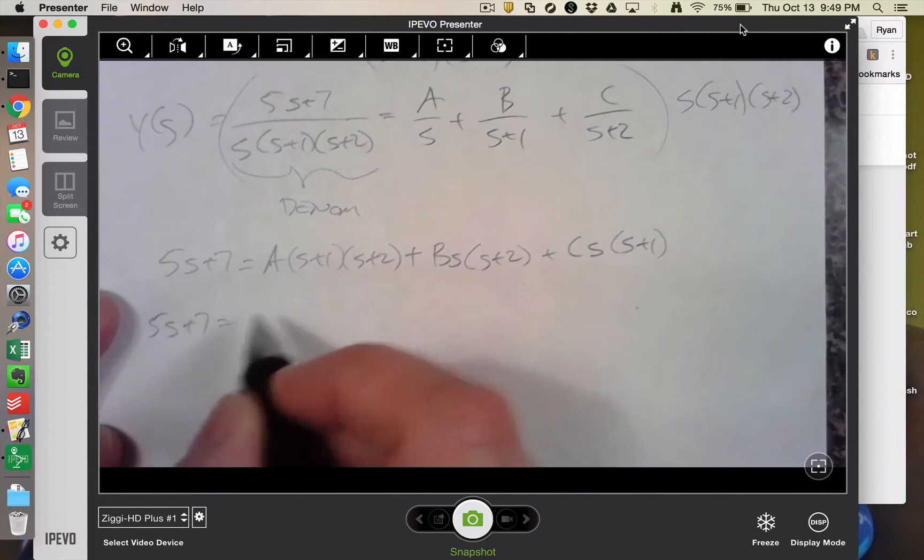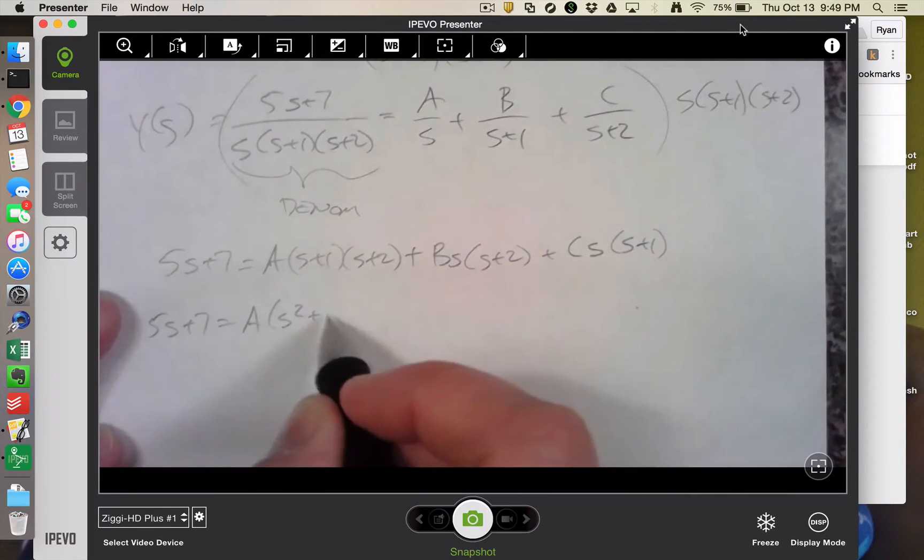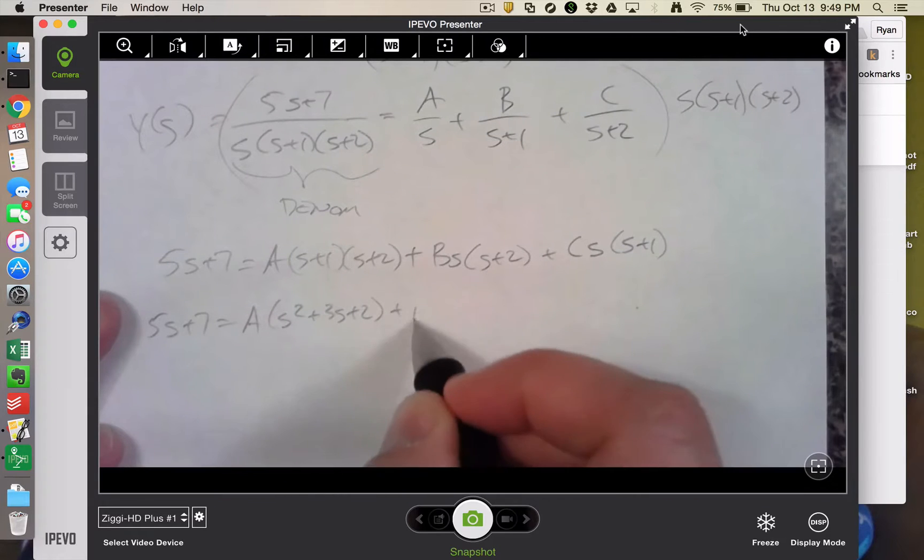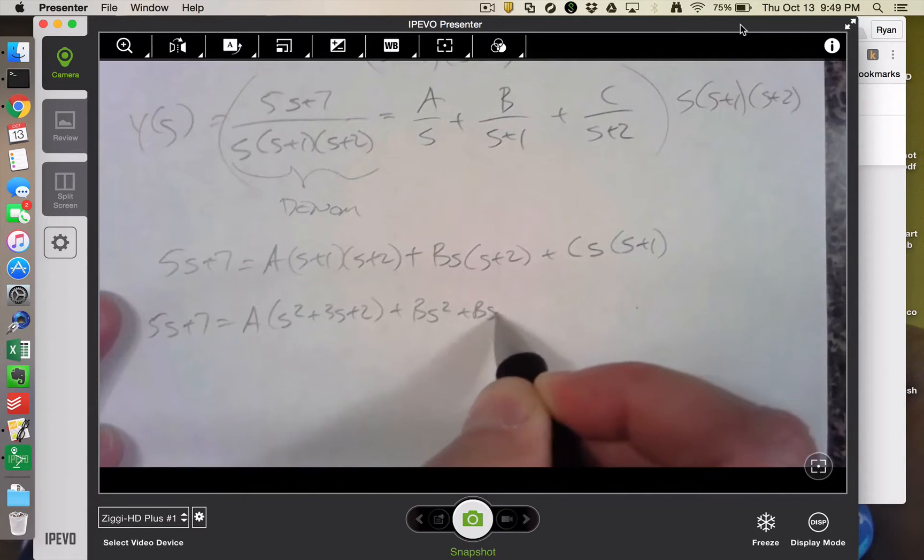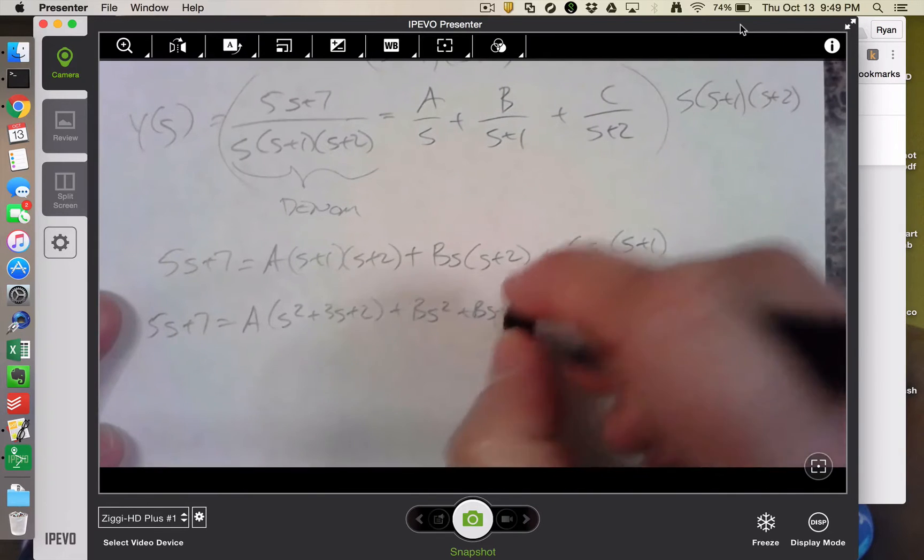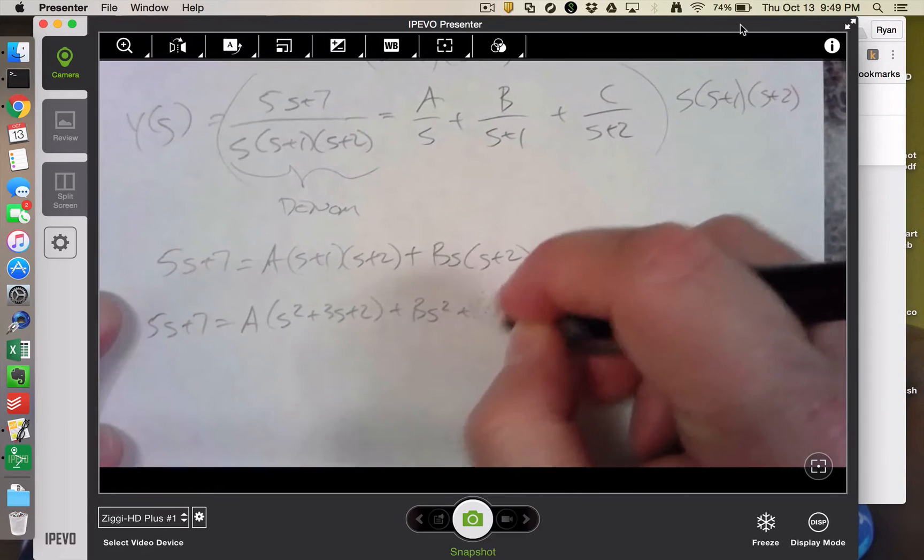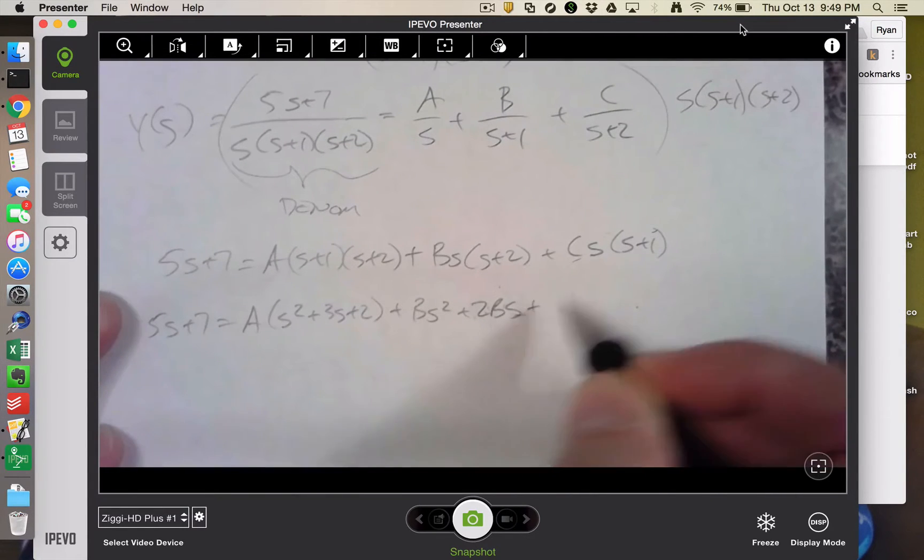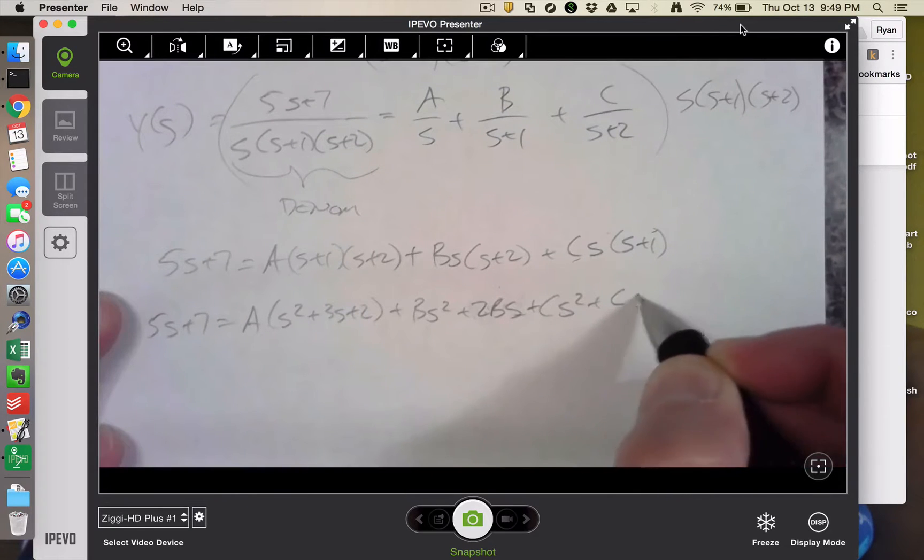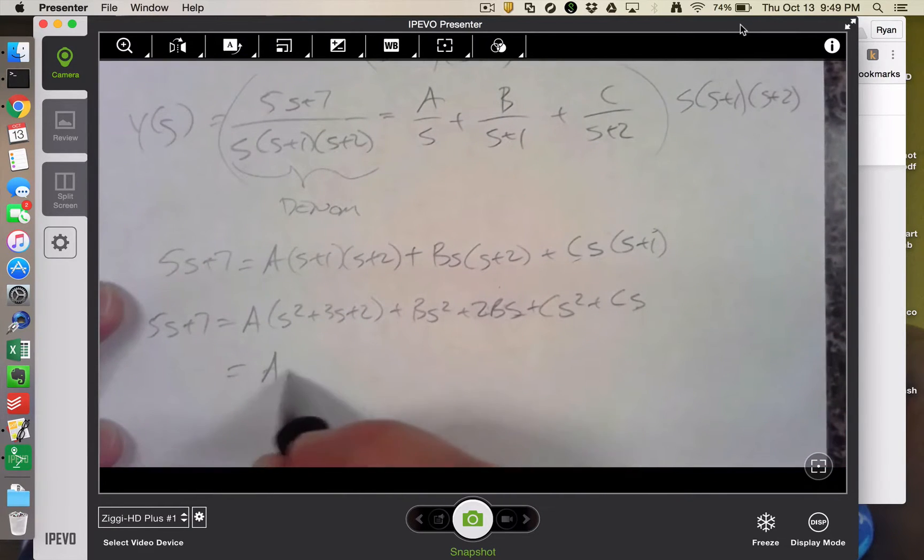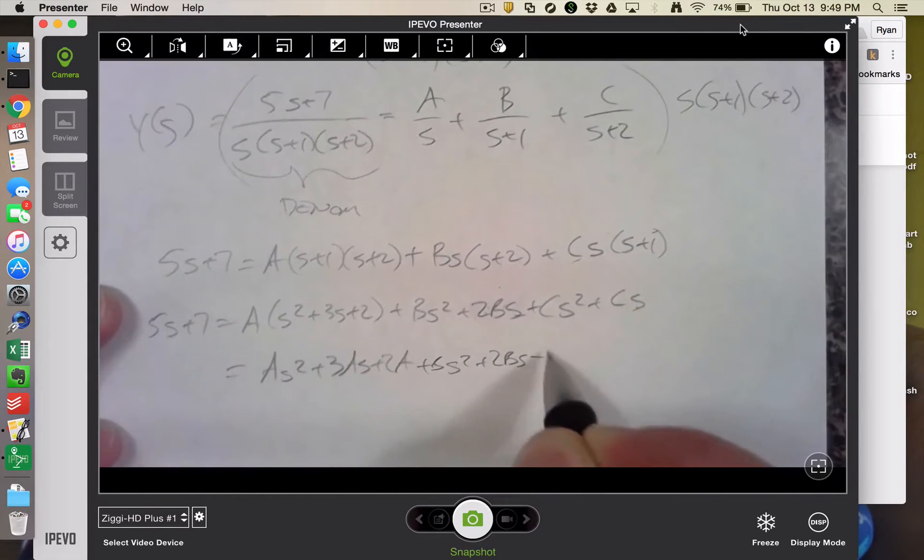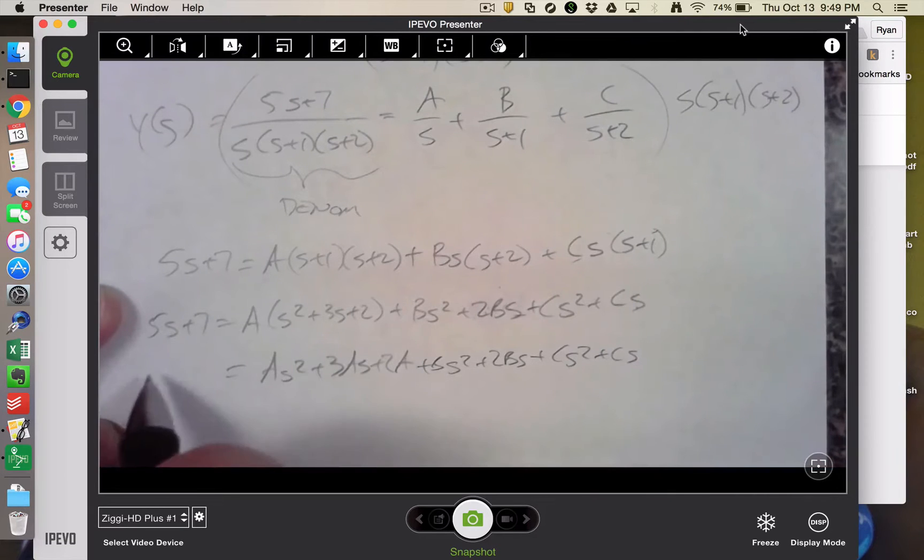So I'll get 5s plus 7 equals a, s squared plus 3s plus 2 plus b, s squared plus 2bs plus c, s squared plus cs. And if I multiply that out just a little further, I would get as squared plus 3as plus 2a plus bs squared plus 2bs plus cs squared plus cs equals 5s plus 7.